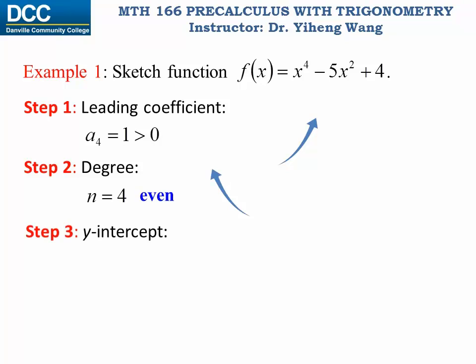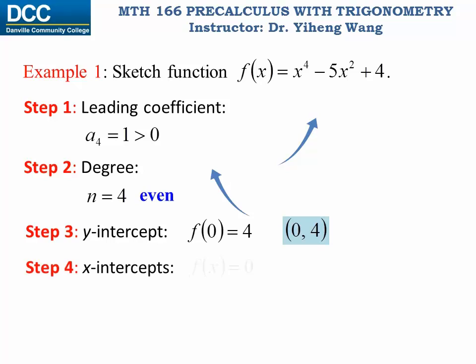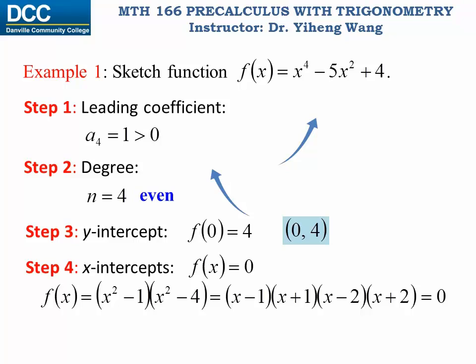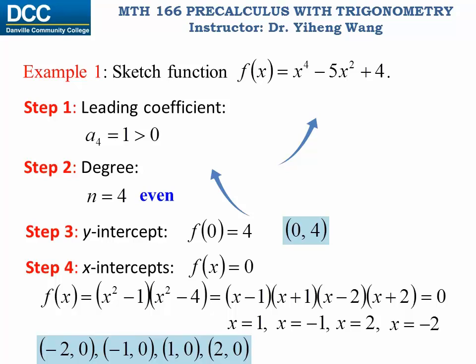Step 3 — y-intercept: substitute x = 0 to get f(0) = 4, so the y-intercept is (0, 4). Step 4 — x-intercepts: set f(x) = 0 and factor to get (x - 1)(x + 1)(x - 2)(x + 2) = 0. Solving gives x = 1, -1, 2, or -2. These are the zeros of the function and correspond to the x-intercepts of the graph.